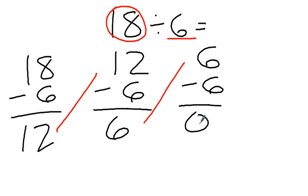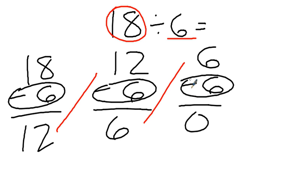Okay, so I got to 0. I subtracted, I started with 18 and kept subtracting 6 each time. It took me one, two, three times. 18 divided by 6 is 3.